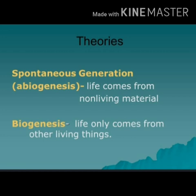The next theory is biogenesis. Biogenesis is the theory that scientists believe: life only comes from other living things. So living things can only come from other living things — non-living things like mud or other materials cannot produce life. These two theories, to prove or disprove, different scientists performed different kinds of experiments.